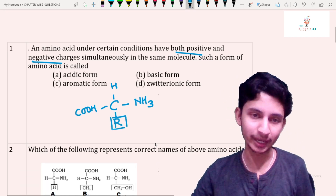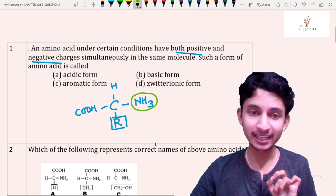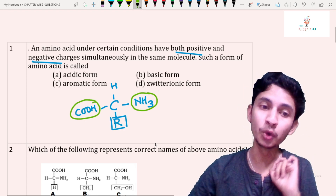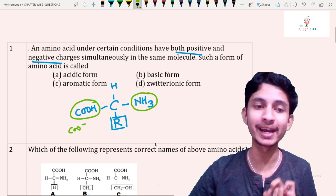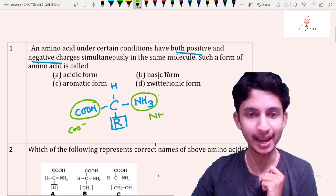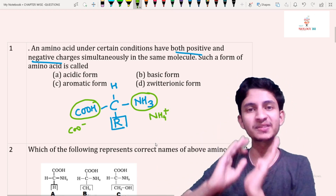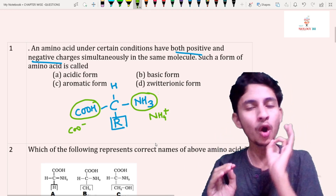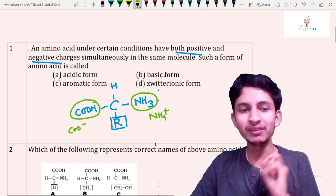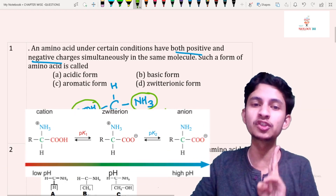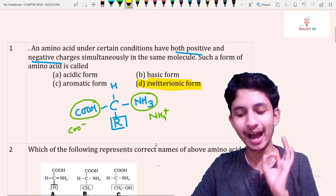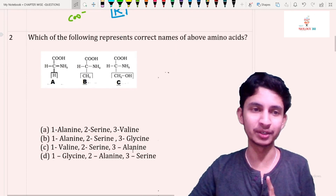NH3 is basic in nature and COOH is acidic in nature. COOH will donate H+ ion and become COO−; NH3 is basic, it will accept H+ and become NH4+. So an amino acid can show both acidic and basic properties. In conditions where it carries both positive and negative charges, that is called the zwitter ionic form. So our answer will be option D: zwitter ionic form.